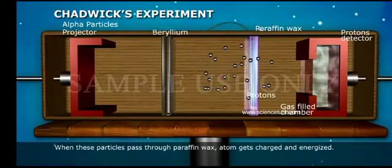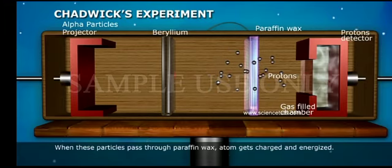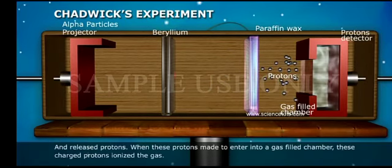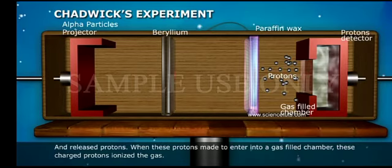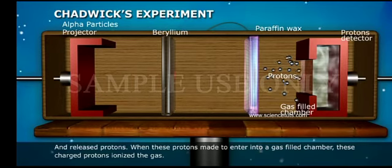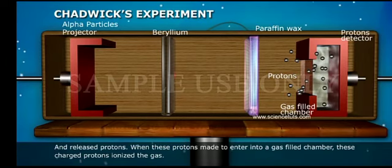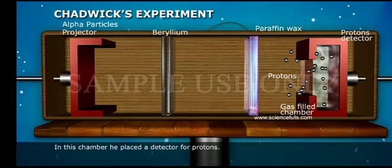When these particles pass through paraffin wax, atoms get charged and energized and release protons. When these protons are made to enter into a gas-filled chamber, these charged protons ionize the gas. In this chamber, he placed a detector for protons.